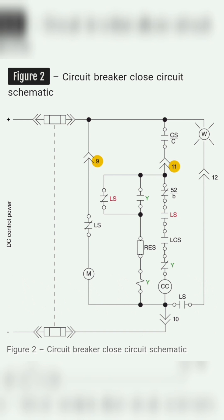What resets the Y relay is the removal of the close command from the control switch contact CS-C. The normally closed contact from the Y relay is then closed because the anti-pump relay is no longer powered. Stab pin 11 receives voltage when the control switch close contact is closed. The close coil is energized when the 52B contact, LS contact, LCS contact, and Y contact are all closed. The 52B contact automatically opens when the breaker closes, cutting off power to the close coil.